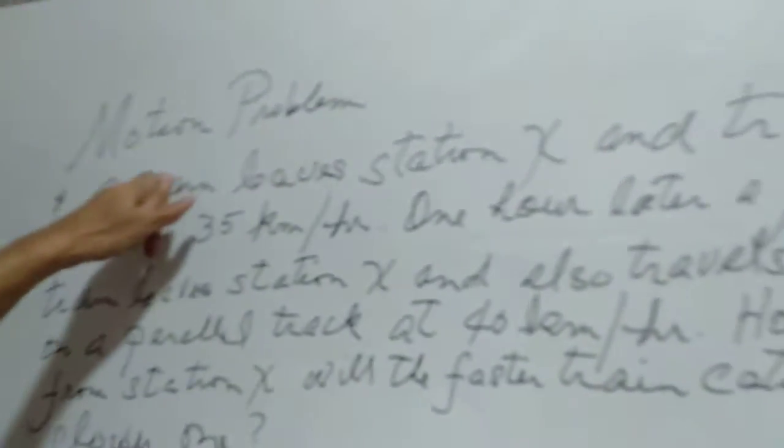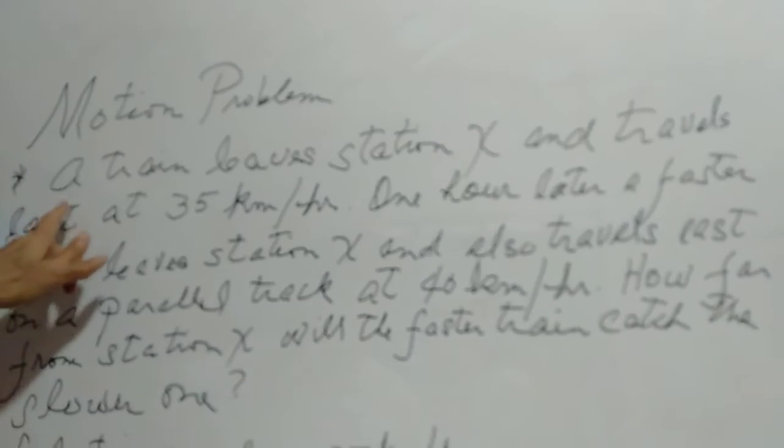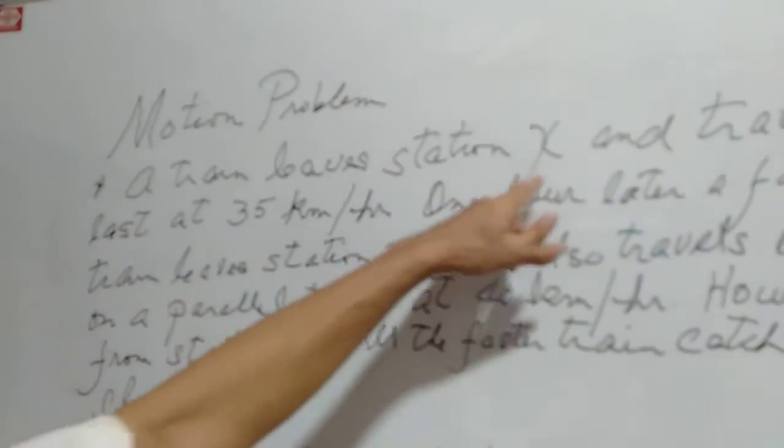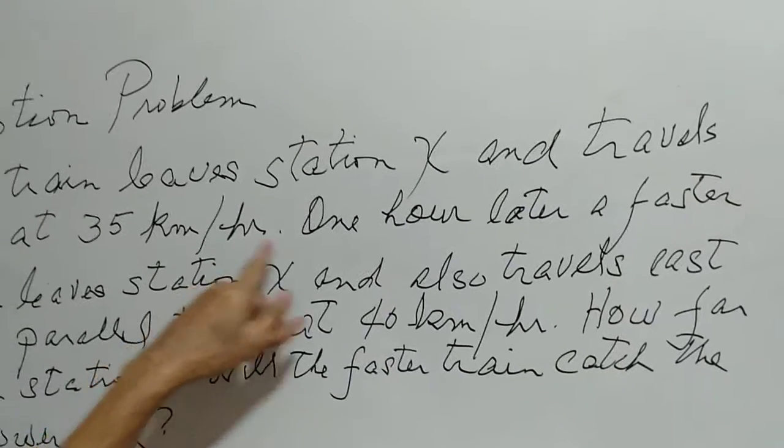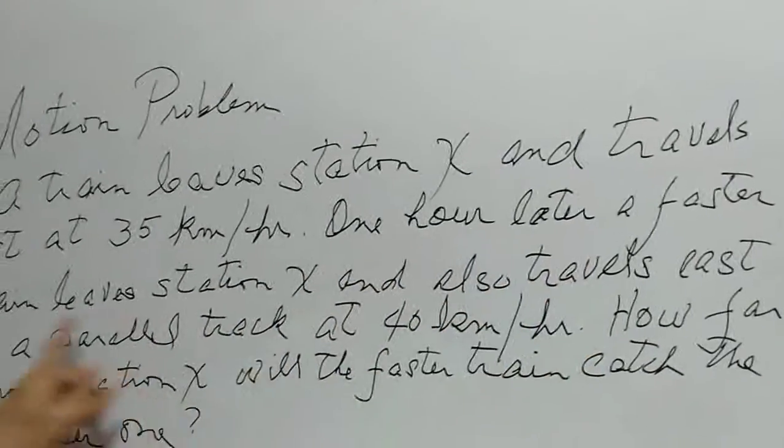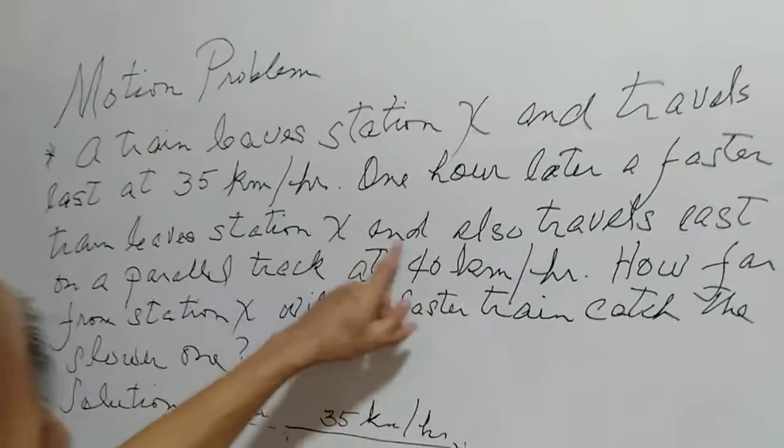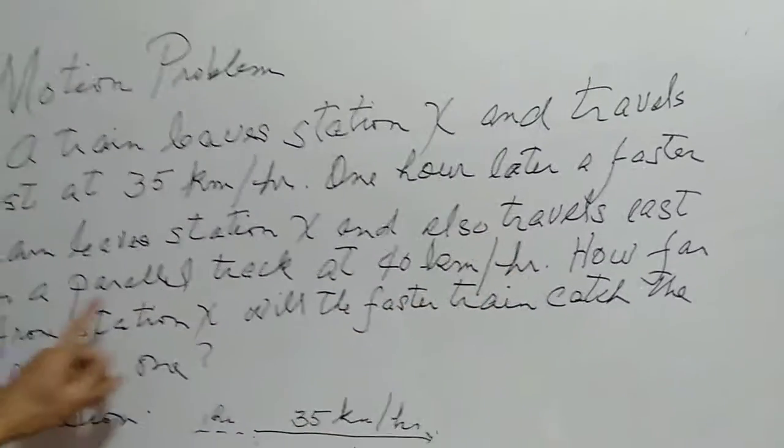Hi, today's video is about motion problems. We have this problem here: a train leaves station X and travels east at 35 kilometers per hour. One hour later, a faster train leaves station X and also travels east on a parallel track at 40 kilometers per hour.